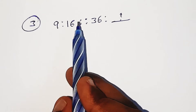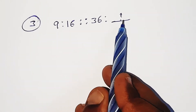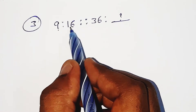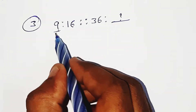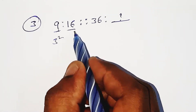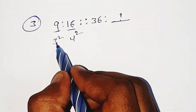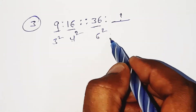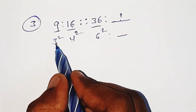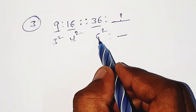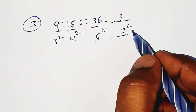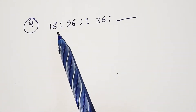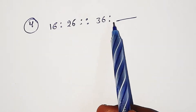Next problem: 9 colon 16, proposition 36 colon question mark. 9 is 3 squared, 16 is 4 squared. 36 is 6 squared, so the next number follows the pattern: 6 is 7 minus 1, so 7 squared is 49. 49 is the answer.